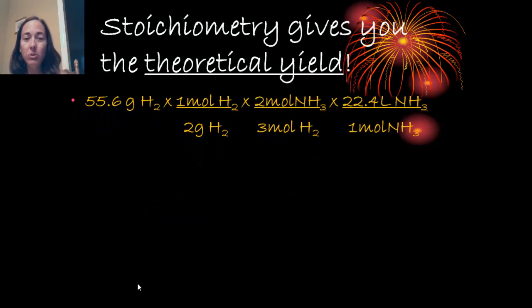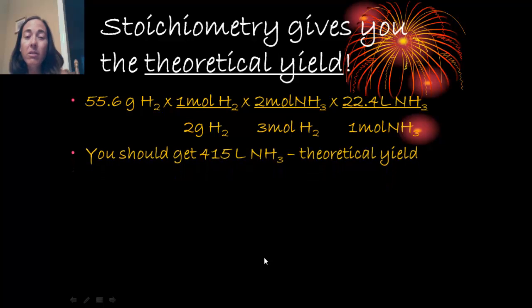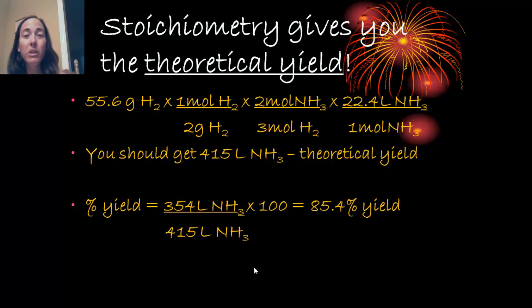Stoichiometry gives you the theoretical yield. So this time, I took the grams of hydrogen that I started with, and I converted to moles. Then I used the mole ratio. And then I used a review conversion, which was 22.4 liters in one mole of ammonia. That gives me my theoretical yield. Now, that gives me 415 liters of ammonia. That's how much I should get. But remember back in the problem, it told me that I only got 354 liters of NH3. So the percent yield is calculated by dividing that actual 354 liters by the theoretical 415 liters. When you multiply by 100, you get 85.4% for this problem.